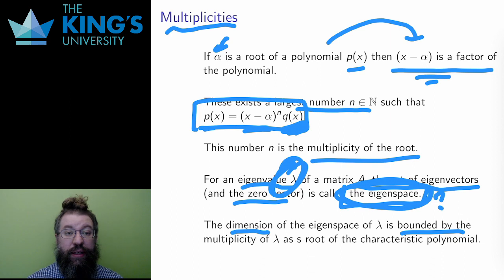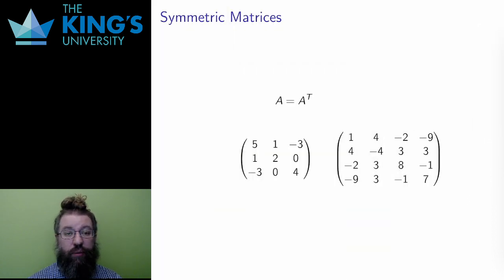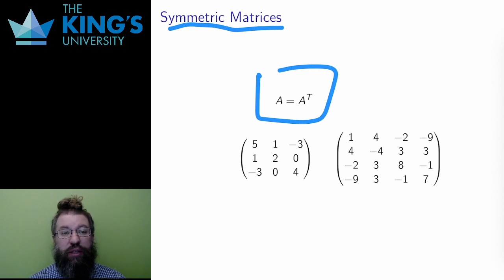And finally, I need one last definition before I finish this video. This may seem a bit random, but it will be useful in the examples. A matrix is symmetric if it is the same as its transpose. Recall the transpose is the mirror over the diagonal, or equivalently, it is the matrix where the rows and columns are switched. These two matrices are symmetric.